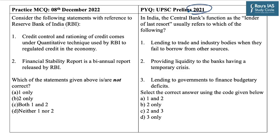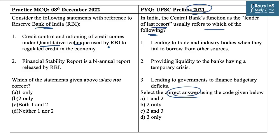Before solving the practice MCQ, have a look at this question from UPSC prelims 2021: in India, the central bank's function as the lender of last resort usually refers to which of the following? You have to identify the correct statements from the given three. On similar lines, we have designed one practice MCQ on RBI. Statement 1 says credit control and rationing of credit come under the quantitative technique used by RBI to regulate credit in the economy.